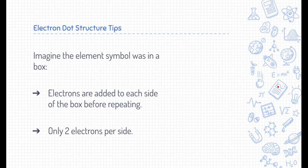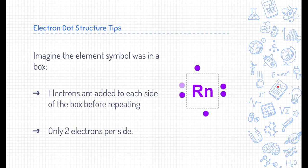Now, here's a little tip when you're drawing electron dot structures. Sometimes students don't know where the actual dots go. Well, imagine that if you were drawing the electron dot structure for something like radon, imagine that that symbol is in a box. Now, electrons are going to go on each side of the box. And every time you draw them, it's good to draw them on opposite sides or fill in all four sides before repeating. And we only do two electrons per side of the box. Again, the box is imaginary.